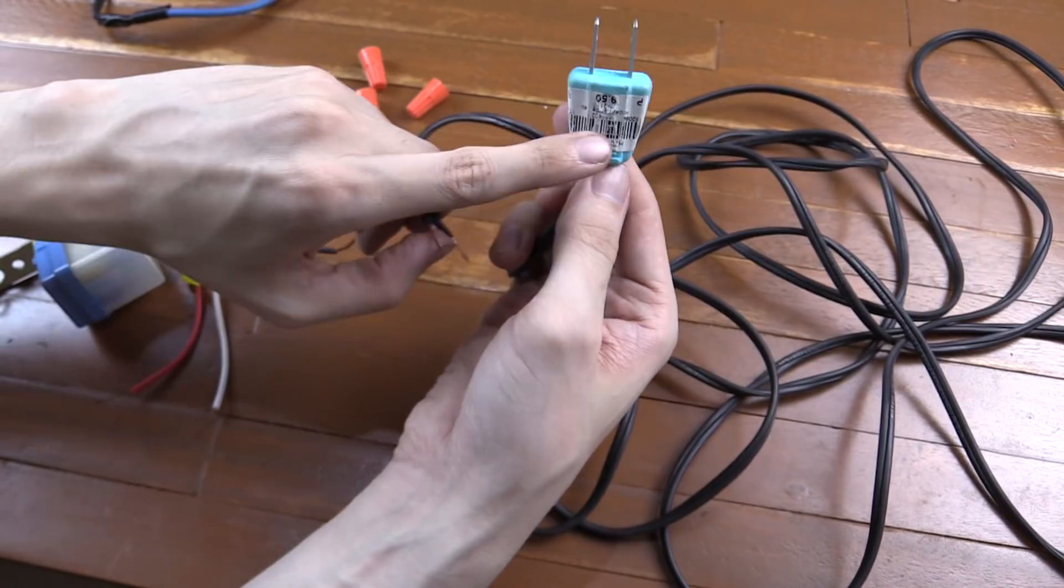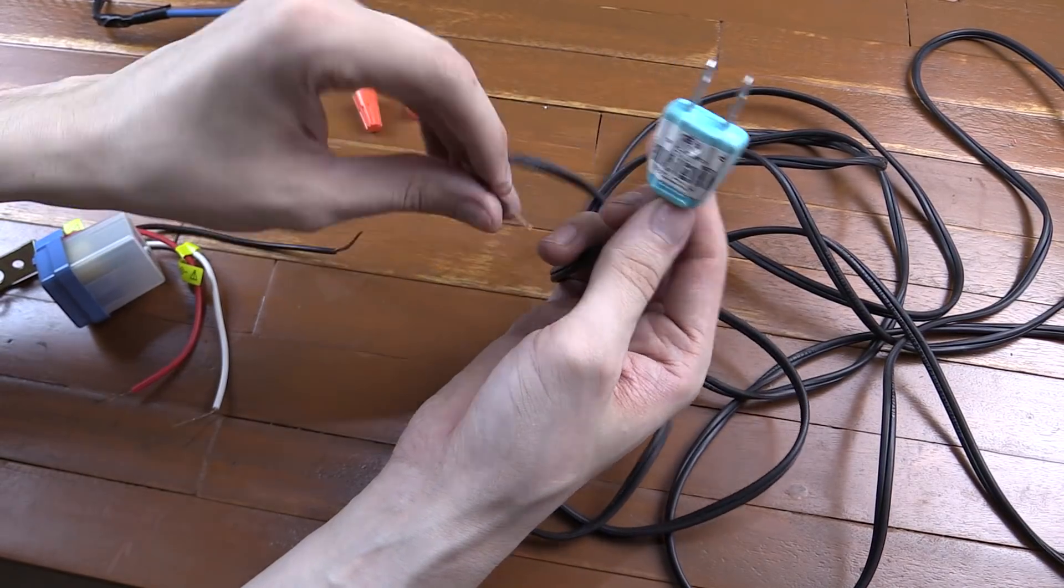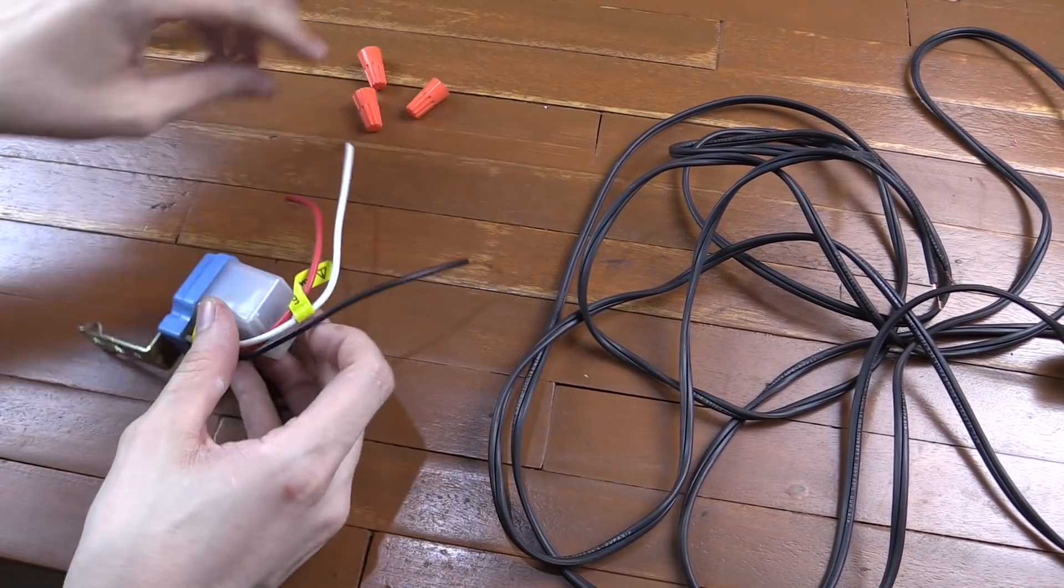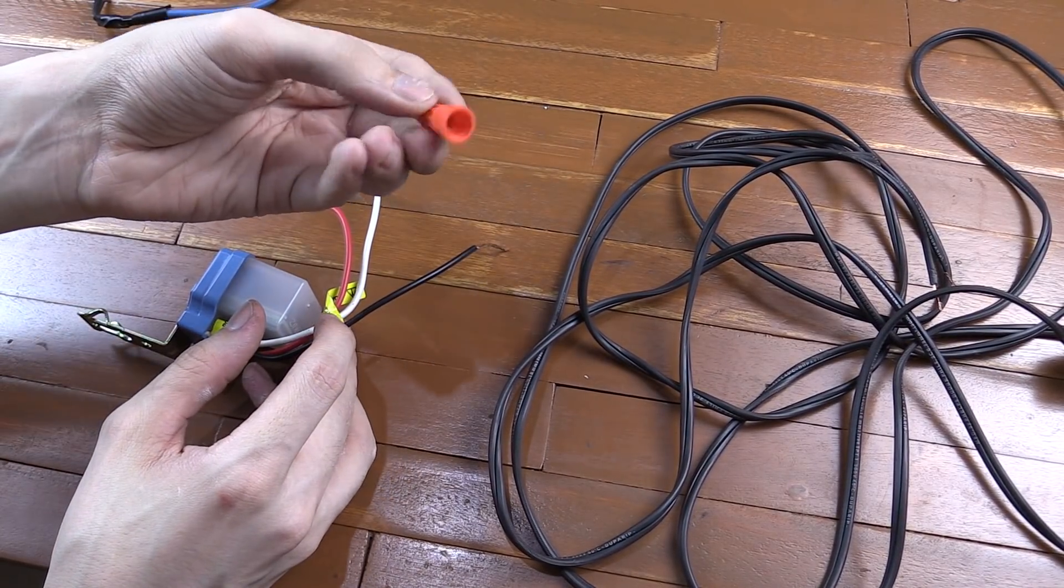We've got this wire here which has a two-pin plug on one end and then the two bare wires. And then we have the photo control switch itself and then three of these little things for joining wires together.